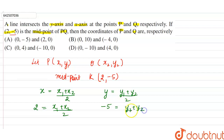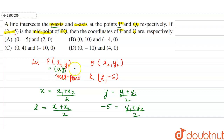Since the line intersects the y-axis at P, the x-coordinate of P is 0, so x1 = 0 and y1 = y. Similarly, since the line intersects the x-axis at Q, the y-coordinate of Q is 0, so y2 = 0 and x2 = x. Now we have the coordinates of P and Q.